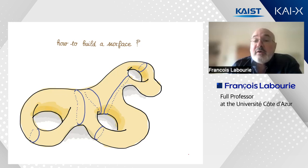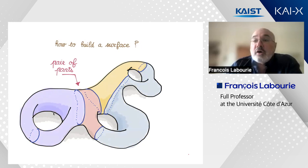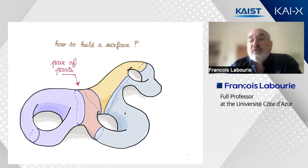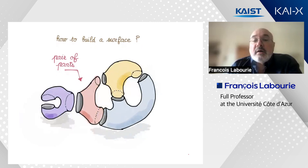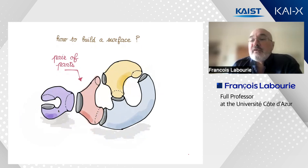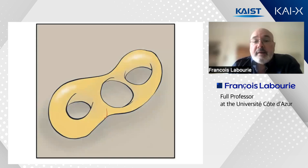Now consider what happens when you cut your surface along these curves. Using coloring to show the different pieces, you have one, two, three, four different pieces. If you cut along these curves you see that all the pieces look about the same — they are what we call a pair of pants. Here is a little animation showing the decomposition of a surface into pairs of pants.